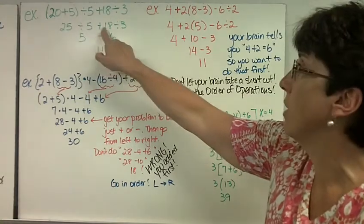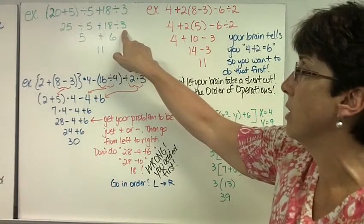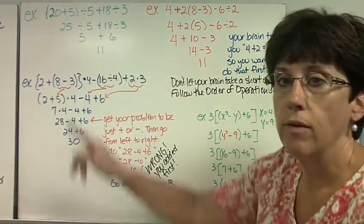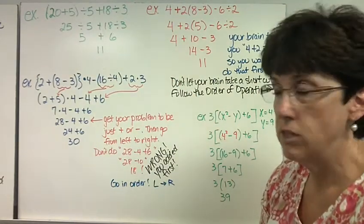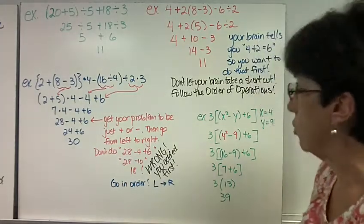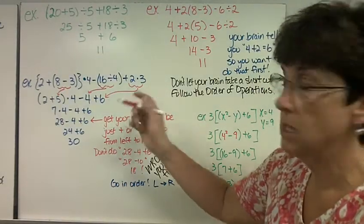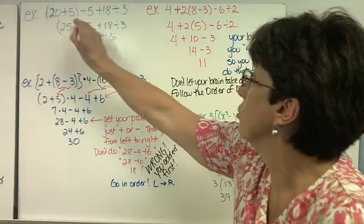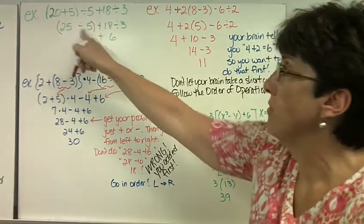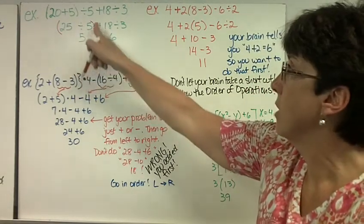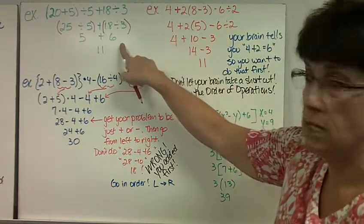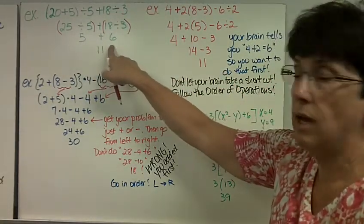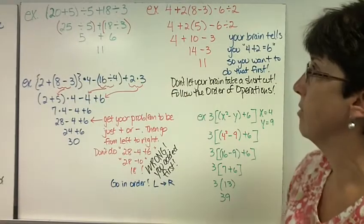I write the 20 plus 5 is 25, divided by 5 plus 18 divided by 3. Now if you look at your problem, you have division, addition, division. What would come first? Division. So I'm going to do 25 divided by 5 is 5, plus 18 divided by 3 is 6. Now the only thing I have left is addition. So 5 plus 6 is 11.